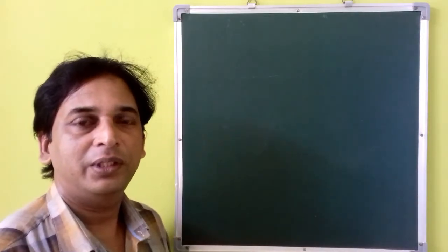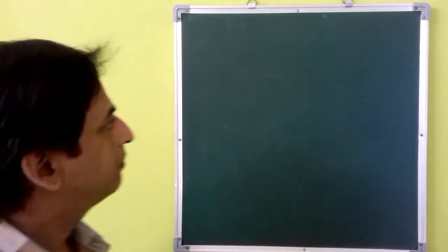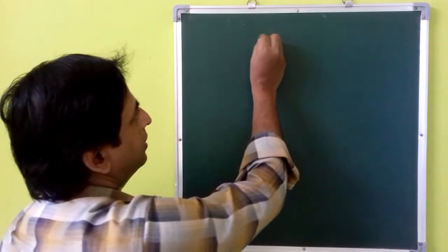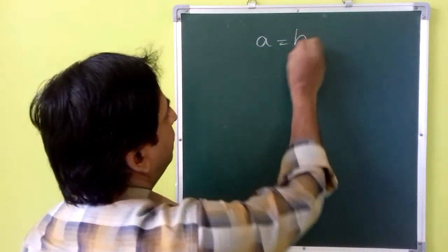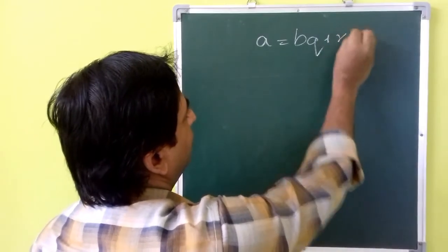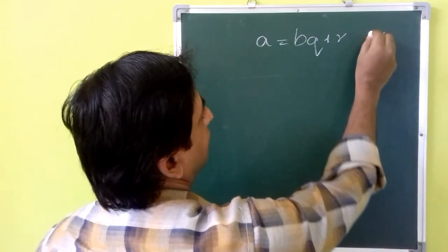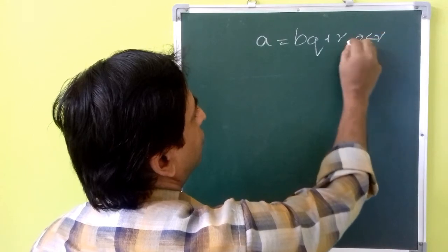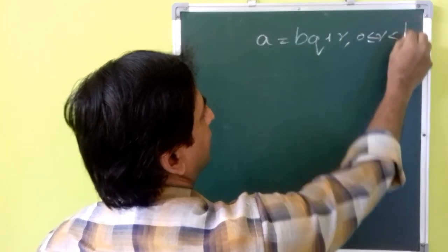We can solve this question using Euclid's division lemma, which states that a is equal to bq plus r, where r is greater than or equal to 0 and less than b.